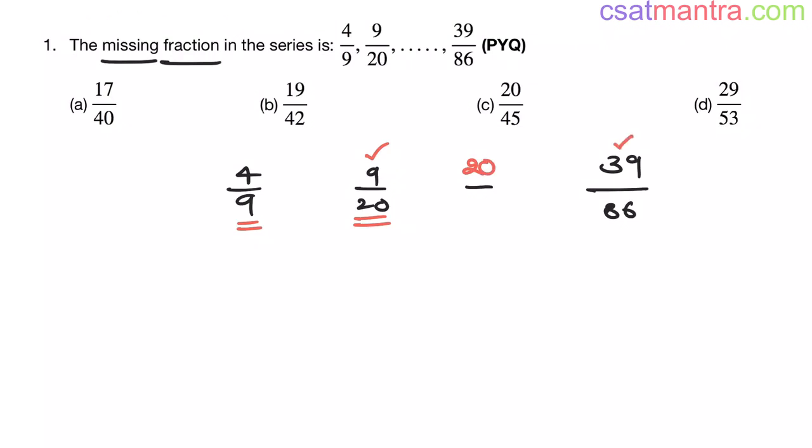But here 39 is there my friends. That means here 39 has to be there. But there is no option which has 20 by 39. So let's eliminate that possibility.